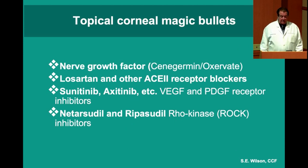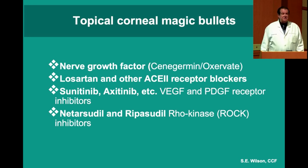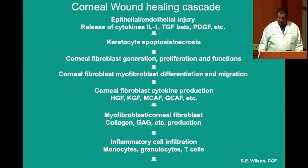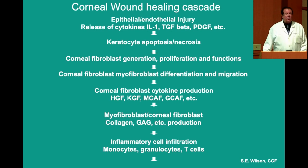We're going to talk about four categories of agents: Nerve growth factor — Oxervate is the name used by the company — Losartan and other ACE2 receptor blockers, some of the new anti-neovascularization agents Centinib and Extinib, and also some of the Rho kinase or ROCK inhibitors. But first, we're going to detail a little bit about corneal wound healing.